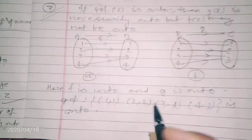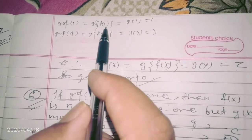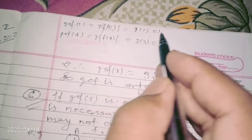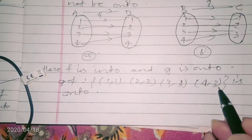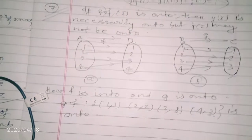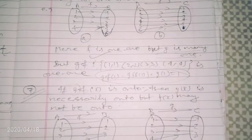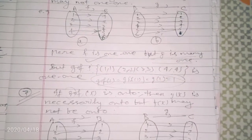Now let's find gof: gof(1) = g(f(1)) = g(1) = 1, and continuing we get gof as {1→1, 2→2, 3→3, 4→3}. Every element of C (1,2,3) has a pre-image in A, so gof is onto. So: if gof is onto, g is always onto. To summarize: if gof is one-one then f is always one-one; if gof is onto then g is always onto.